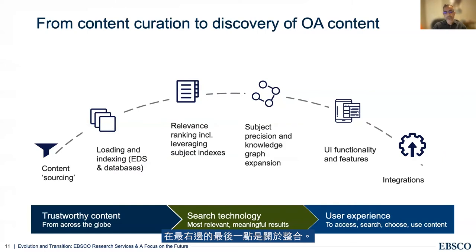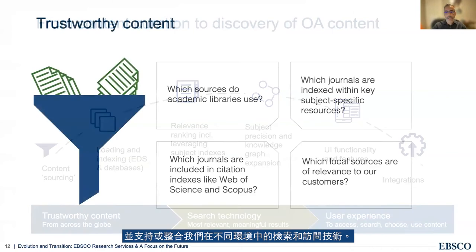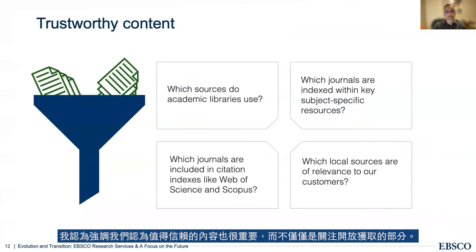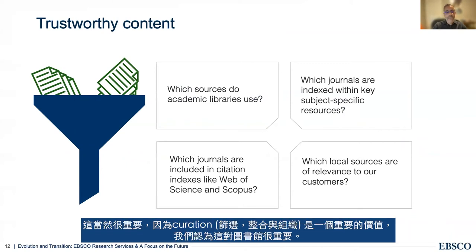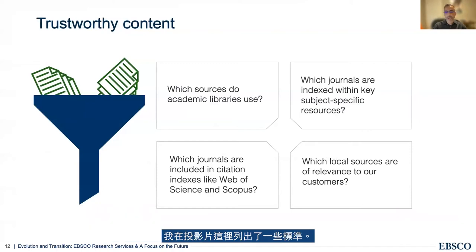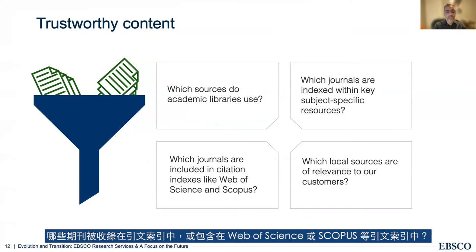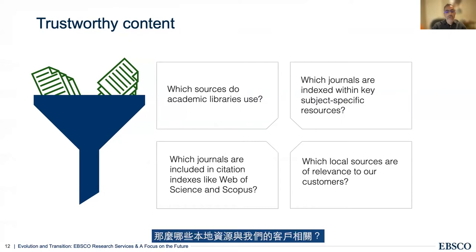It's also important to emphasize what we consider trustworthy content, because curation is a significant value for libraries. The criteria include which sources academic libraries use, which journals are indexed within key subject-specific resources, which journals are included in citation indexes like Web of Science or Scopus, and which local sources are of relevance to our customers. We apply these criteria to both open access and non-open access content alike.